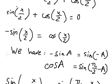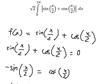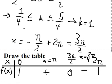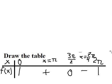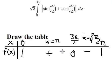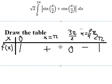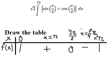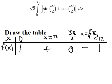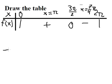So after we analyze this, we can fill in the sign table. We can see that from 0 to 3π over 2, we have positive. From 3π over 2 to 2π, we have negative. So when we remove the absolute value, we need to create two separate integration intervals.